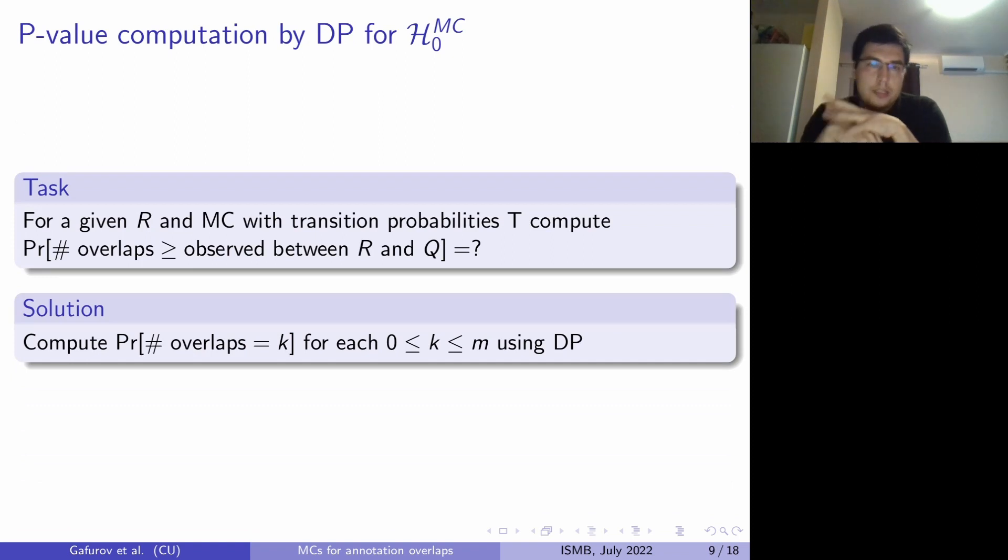And we set the weights in such manner that the probability of generating the original query Q is maximized. So our task is to for a given reference annotation R and Markov chain with set transition probabilities to compute the probability that the number of overlaps would be at least as extreme as some observed statistics. And the solution is to compute the probability of having exact K overlaps for each K between 0 and M using dynamic programming.